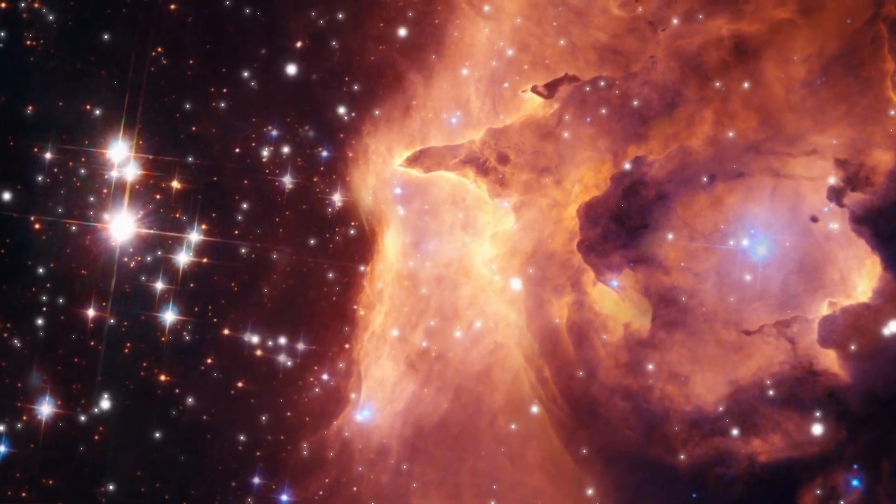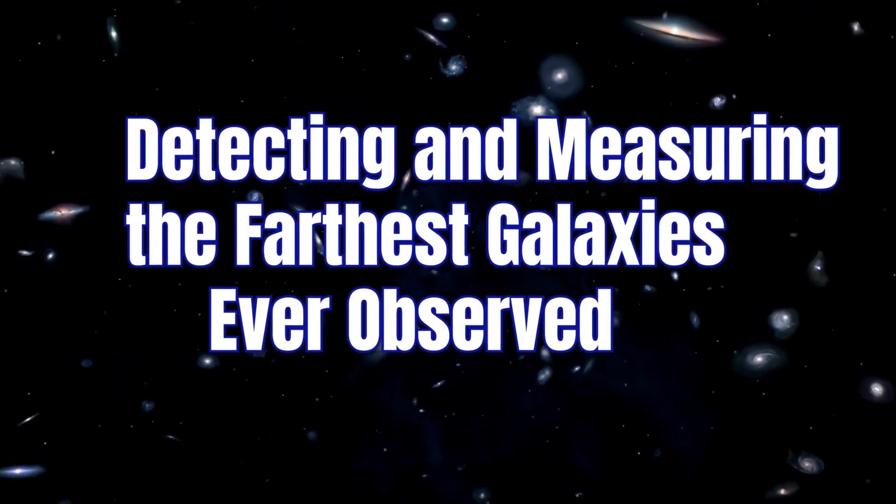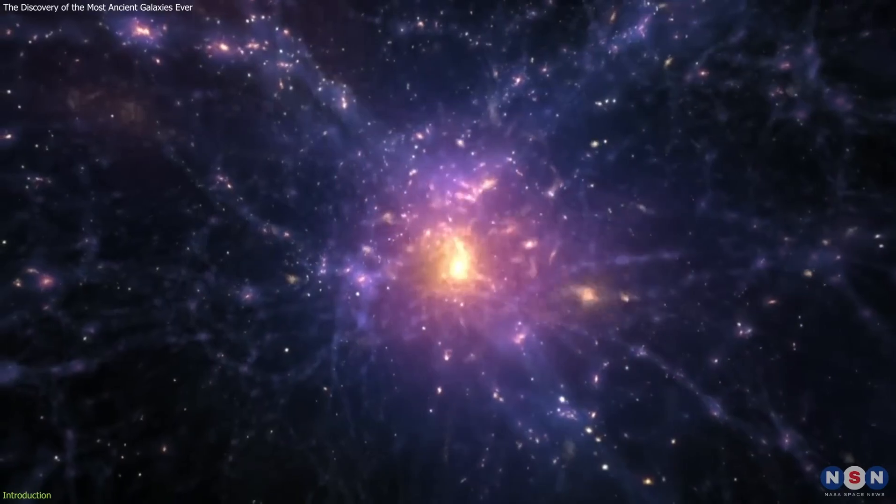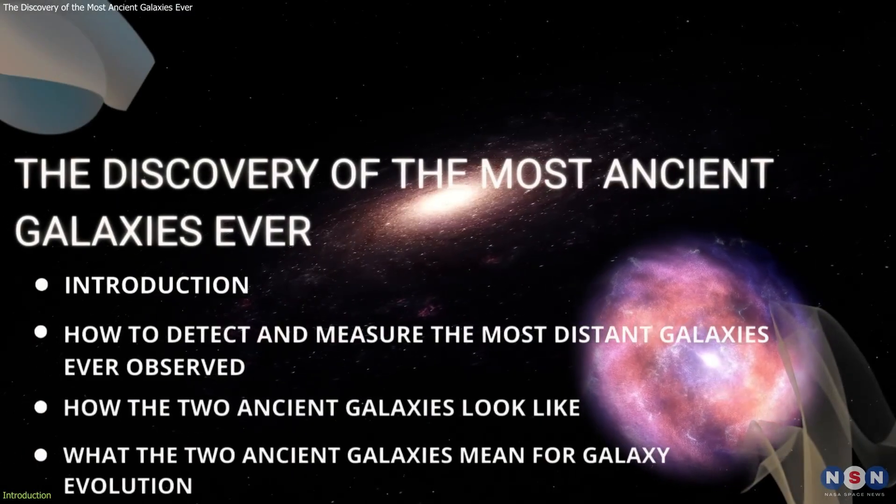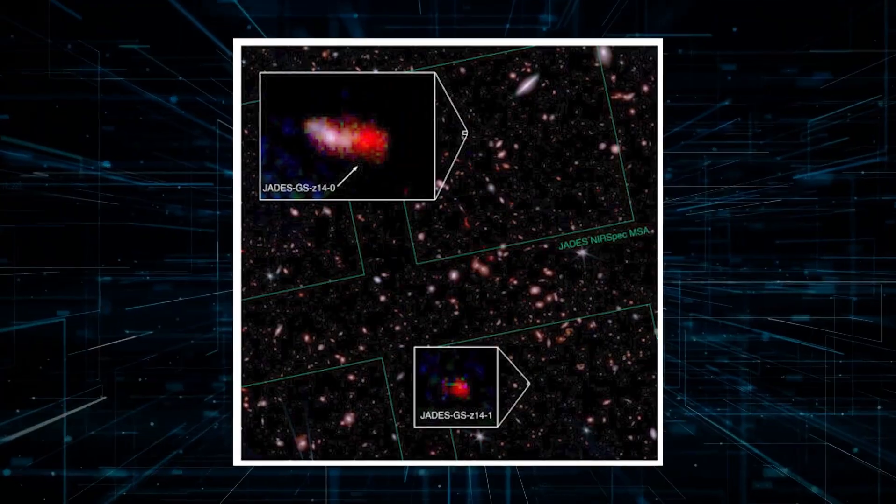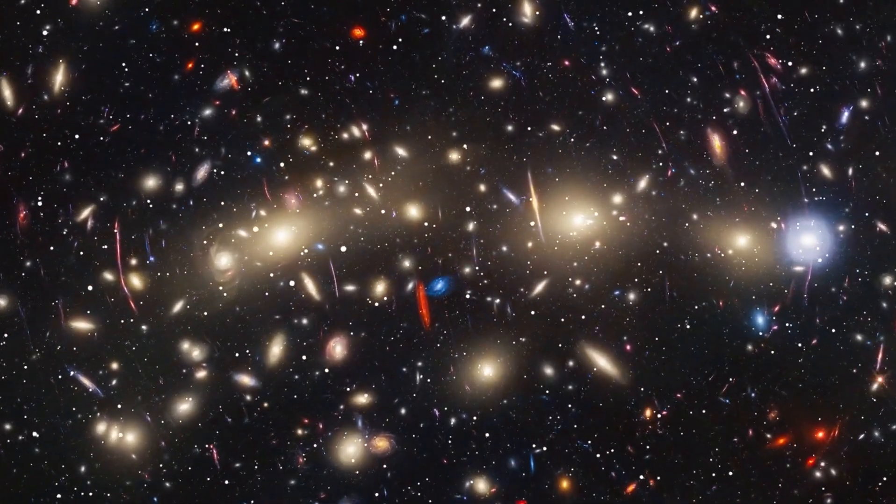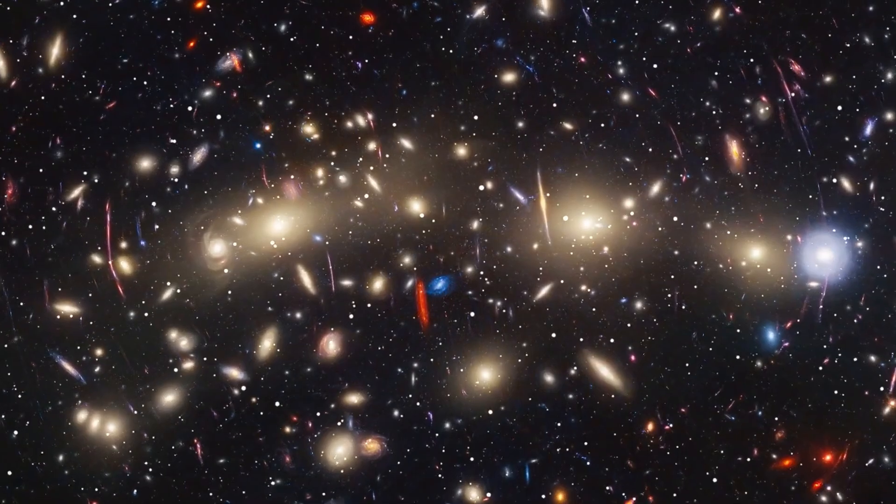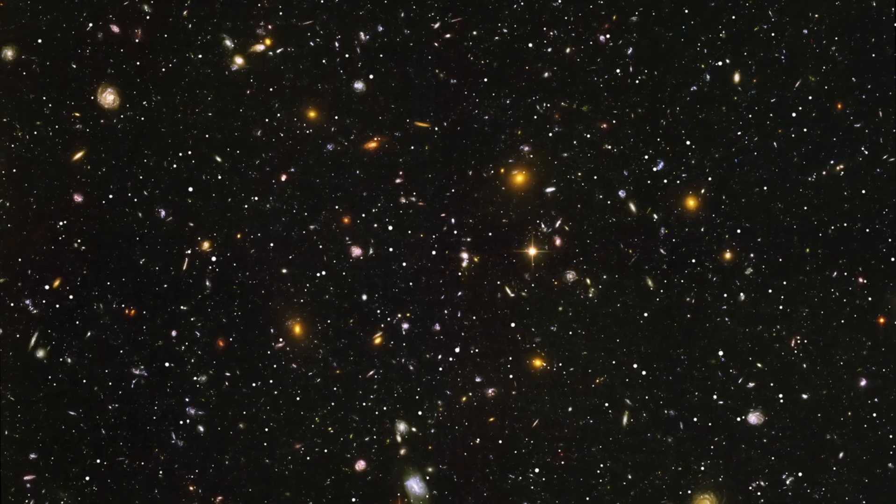The Webb telescope is adept at seeing early galaxies thanks to the high infrared sensitivity of its instruments, particularly its primary imager, the near-infrared camera. Light leaves these cosmic dawn galaxies with a wide range of wavelengths similar to light from galaxies that are closer to the Milky Way. It is the journey of billions of years that transforms this light into low energy and long wavelength light in the near-infrared and infrared regions of the electromagnetic spectrum. The very fabric of space is expanding, and as light passes through it, its wavelength is stretched along with it. This causes the light to shift down to the red end of the electromagnetic spectrum, hence the name for this phenomenon: redshift.